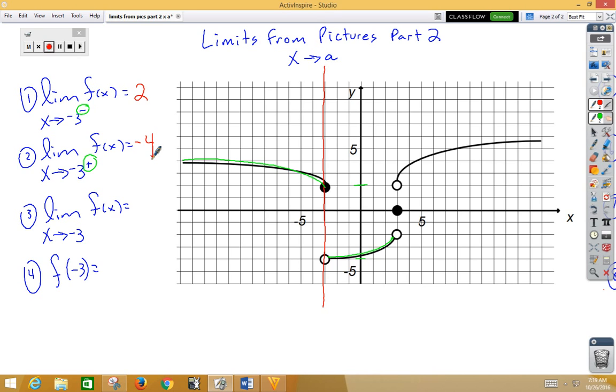Notice we're not using this far right piece because it does not get to negative 3. Now we have the two-sided limit as x approaches negative 3, which means we need to compare the left side limit with the right side limit. Notice this time, these two are not the same. Therefore, our two-sided limit does not exist. We cannot be in two places at once.